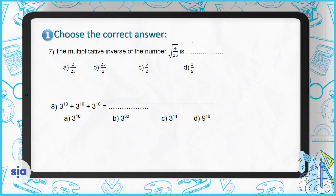Question 7: what is the multiplicative inverse of the square root of (4/25)? The square root of 4/25 equals the square root of 4 over the square root of 25, which is 2/5. The multiplicative inverse is the flipped number, so it will be 5/2.